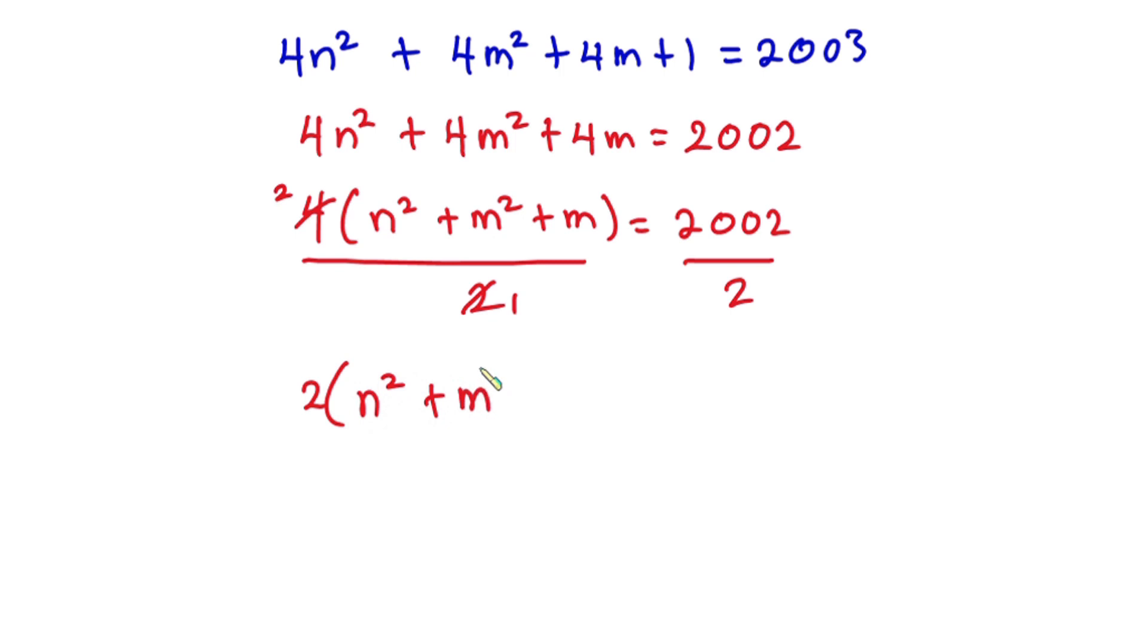Now 2 goes into 2 one time and then goes into 4 two times. So we have 2 into n² plus m² plus m is equal to 2002 divided by 2. That is 1001.